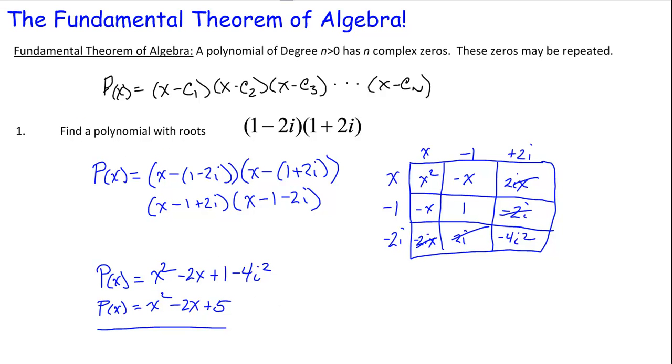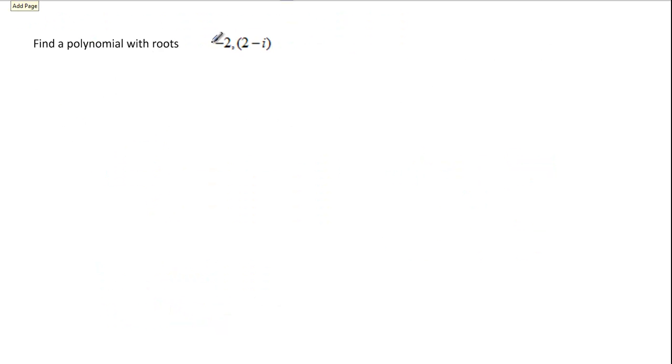So let's try a second one of these just to make sure. Here we have roots of negative 2, 2 minus i. But wait a minute. Complex numbers run in conjugate pairs. So what you have to realize is there is actually a third root here of 2 plus i that has to be in place. Now this time we have three roots that we have to deal with. So our polynomial, when we follow our rules as before, becomes x plus 2, remember it's x minus the root, and then x minus 2 minus i, and x minus 2 plus i.